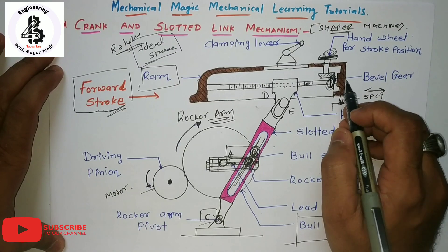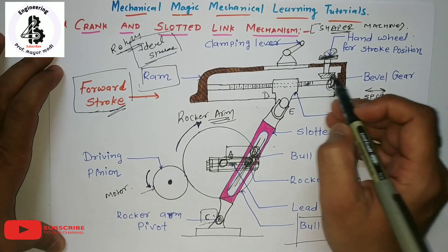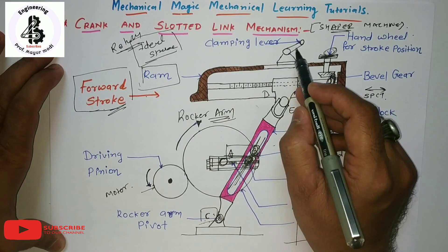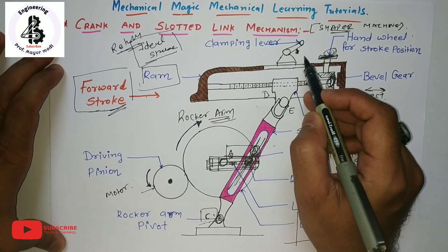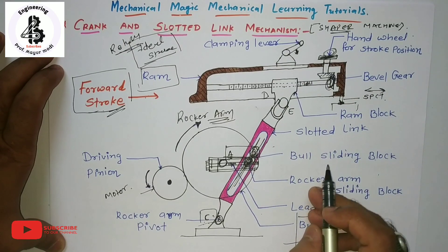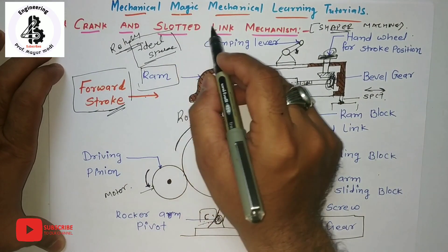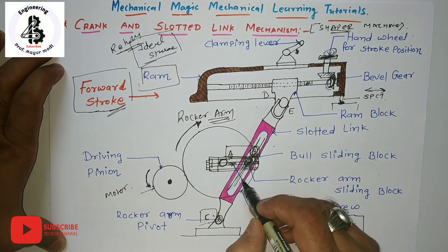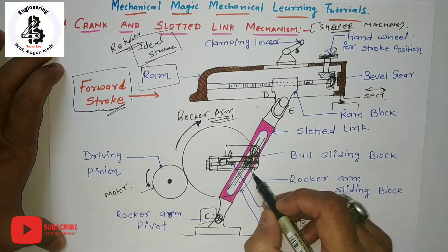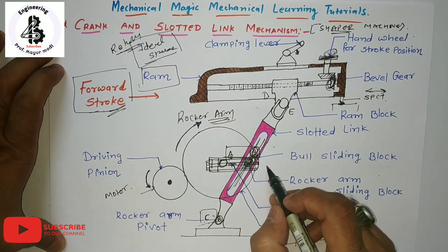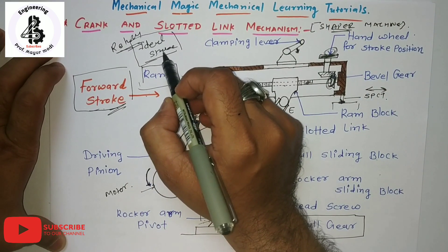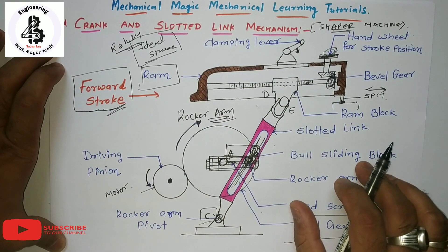When the machine is in operation, the clamping lever is tightened. That is all about the crank and slotted link mechanism, which is used in shaper machines for making a quick return mechanism — carrying out the forward stroke for cutting while the ideal stroke is a quick return stroke.